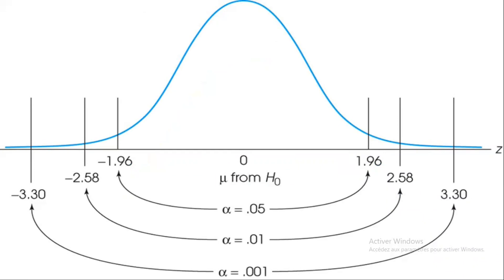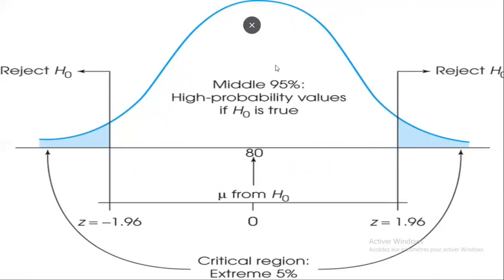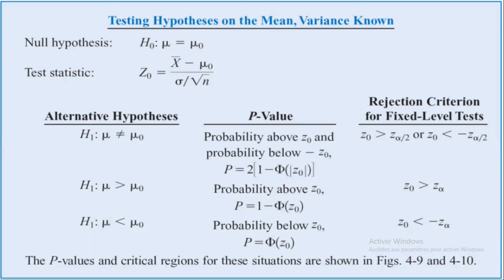Step two: locate the critical region. The critical region consists of outcomes that are very unlikely to occur if the null hypothesis is true — sample means that are almost impossible to obtain if the treatment has no effect. These samples have a probability p less than the alpha level. Step three: compute the test statistic. In this case, a z-score forms a ratio comparing the obtained difference between the sample mean and the hypothesized population mean versus the amount of difference expected without any treatment effect — the standard error. Step four: a large value for the test statistic shows that the obtained mean difference is more than expected if there is no treatment effect. If it is large enough to be in the critical region, we conclude the treatment has a significant effect and reject the null hypothesis. If the mean difference is relatively small, we fail to reject the null hypothesis.